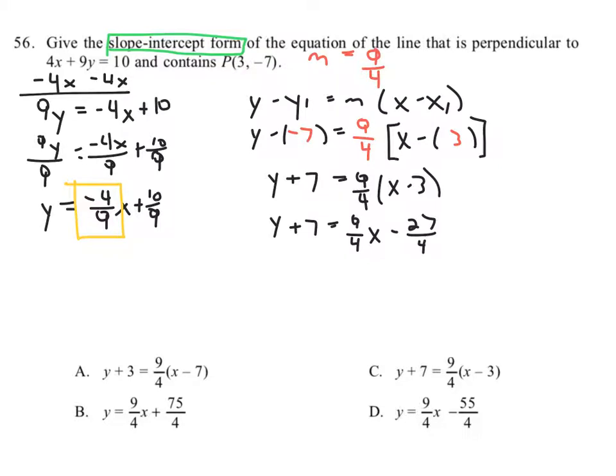And then we have to subtract 7 from both sides, minus 7 minus 7, and that will give us y equals 9 fourths x and this is what we need to do here now. We need to calculate this amount.